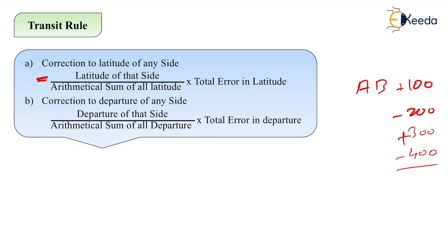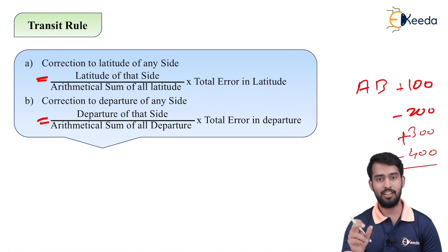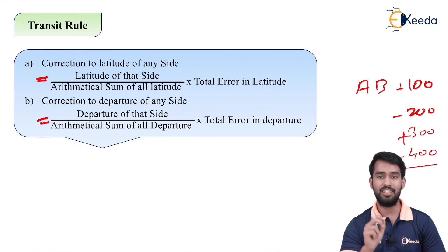Similarly, the correction to the departure of any side is: departure of that particular line (for example AB) divided by the arithmetic sum of all the departures, multiplied by the total error in departure. This gives the correction of departure for that side. This rule must be applied for each side — AB, BC, CD, and DA — because the length, latitude, and departure of each line are different. The total error is common but the latitude and departure of each side differ.